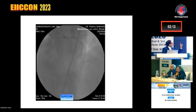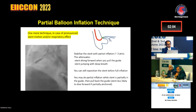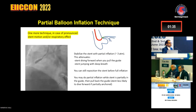This shallow LAO-cranial is the best view to assess the LMC ostium, not the caudal view. The partial balloon inflation technique: we partially inflate the balloon, covering the ostium but not fully — this stabilizes the stent and leaves space to pull it back if we are not covering the ostium. A slight 2–3 millimeter inflation, then reassess, and we can push the stent forward if not covered. This technique is sometimes useful to properly place the stent at the ostium.